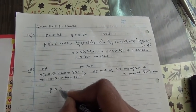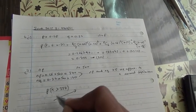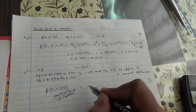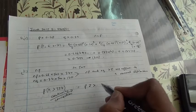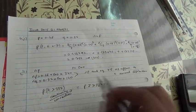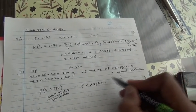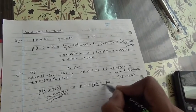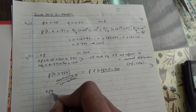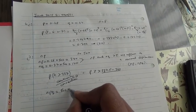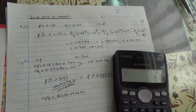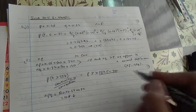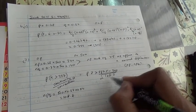We need to find P(X > 337). Using the continuity correction, this becomes P(Z > (337.5 − μ) / σ). The mean is NP = 340, and the variance is NPQ = 500 × 0.68 × 0.32 = 108.8. So we compute P(Z > (337.5 − 340) / √108.8), which gives P(Z > −0.2396).